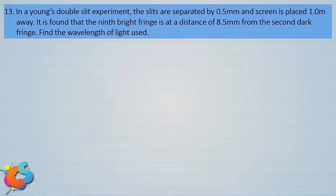Let's take up the next question. In a Young's double slit experiment, the slits are separated by 0.5 millimeter and the screen is placed 1 meter away. Let's write down the data: the slit separation, small d, is 0.5 millimeter, which can also be written as 5 into 10 power minus 4 meter.